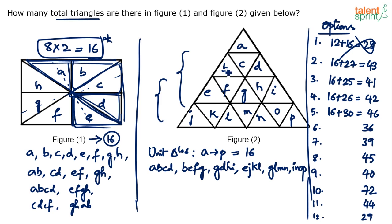Five units won't give a triangle — it will make a parallelogram. Six, seven, eight — none of these give triangles. Nine units will give you a triangle. The top three rows contain 1+3+5 = 9 units. Let me write down the nine-unit triangles.